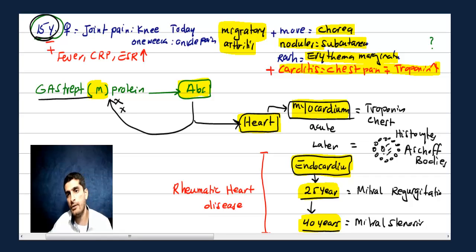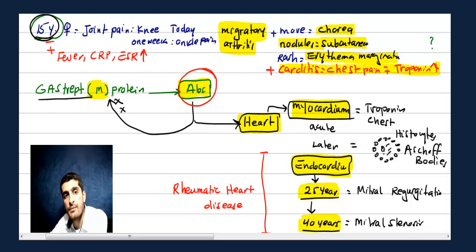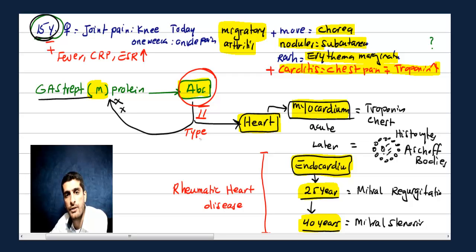Rheumatic heart disease features: endocardium involvement leads to mitral valve disease — regurgitation first, then stenosis. The mechanism is antibody-mediated — Type 2 hypersensitivity reaction. While infective endocarditis is caused by direct microorganism infection, rheumatic heart disease is caused by antibodies cross-reacting with cardiac tissue.